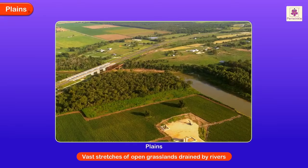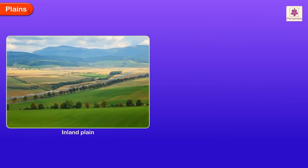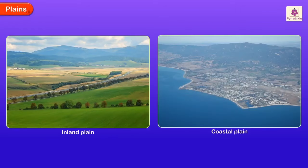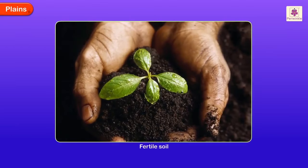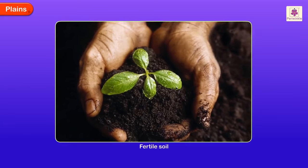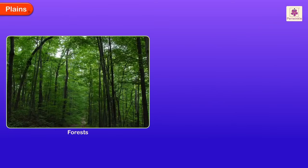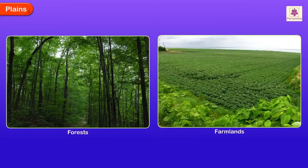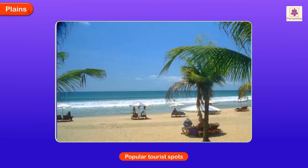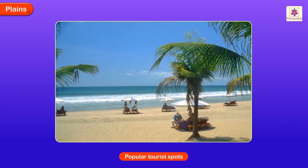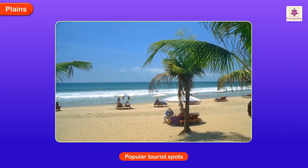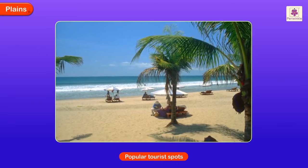Plains are vast stretches of open grasslands drained by rivers. These are found inland and along the coasts. Plains are rich in forests and farmlands. Coastal plains are located along the sea coasts and many of these are popular tourist spots.